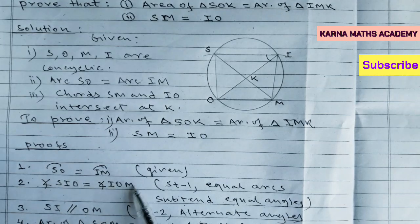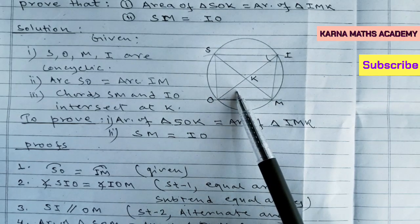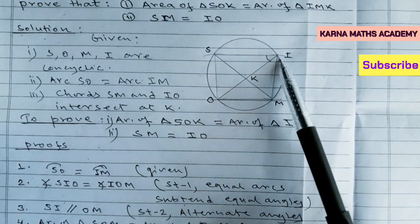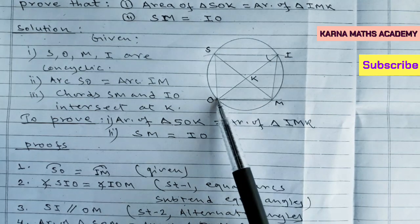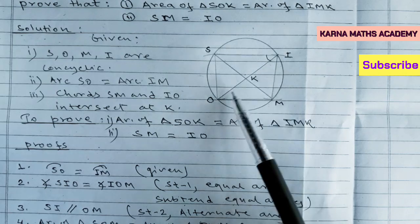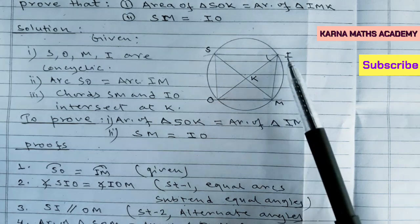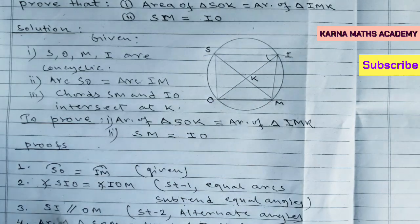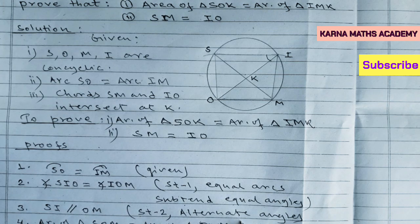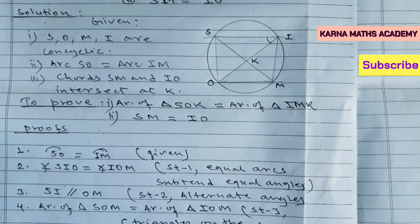Angle SIO and angle IOM are alternate angles. Since alternate angles are equal — that is, angle SIO equals angle IOM — we can write SI parallel to OM. The reason is from statement number 2: alternate angles are equal. This gives us statement number 3.